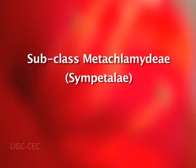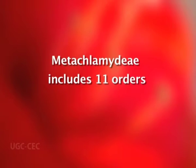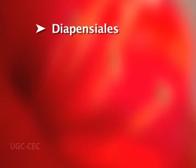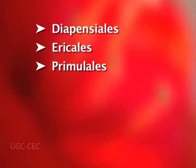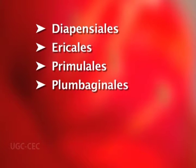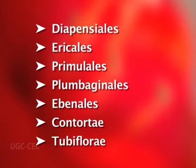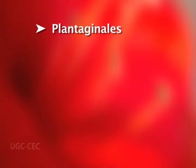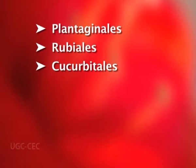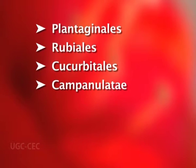In subclass Metachlamydeae, petals are always fused. The subclass Metachlamydeae includes 11 orders: Diapensiales, Ericales, Primulales, Plumbaginales, Ebenales, Contortae, Tubiflorae, Plantaginales, Rubiales, Cucurbitales, and Campanulales.